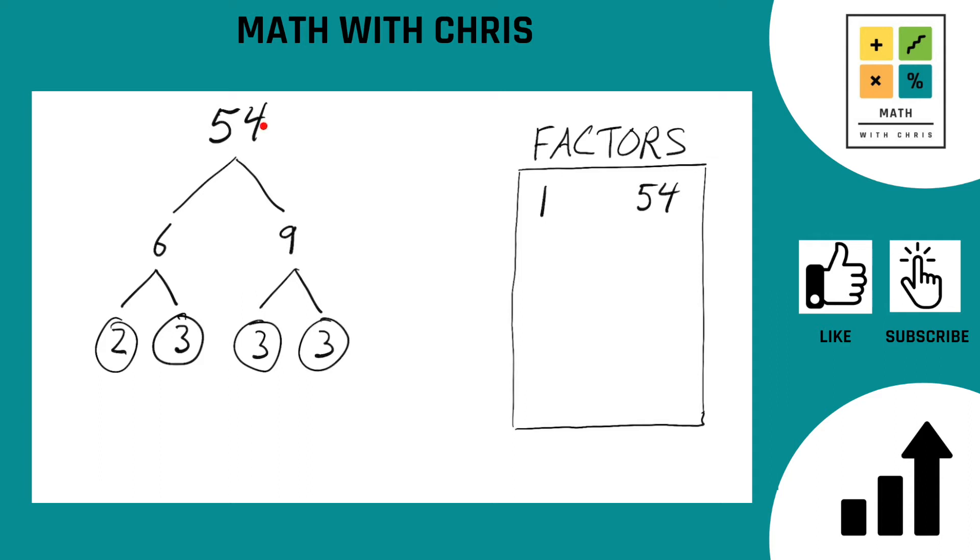And now if you look, we are done with our factor tree. Because no matter what path you take, you end up at a circled prime number. Meaning we're done.